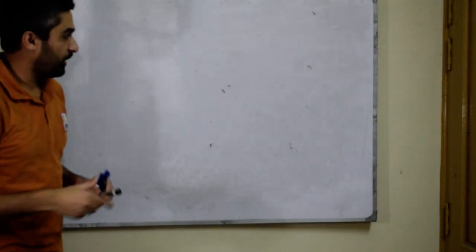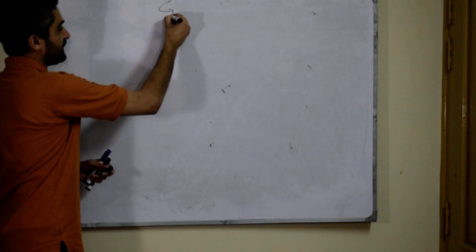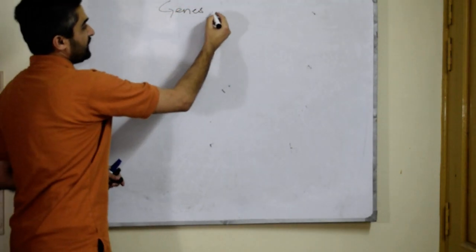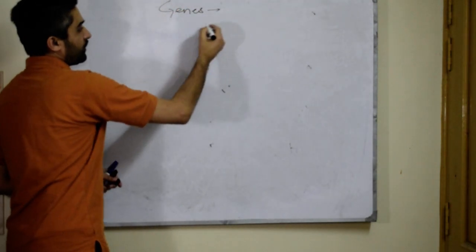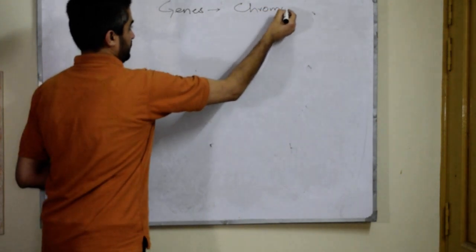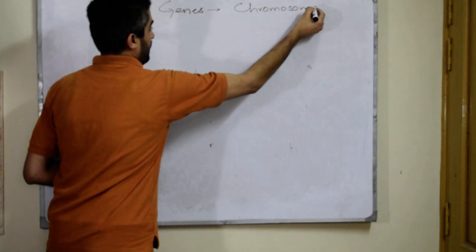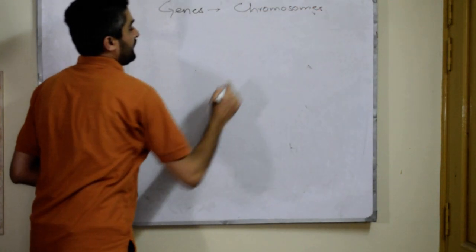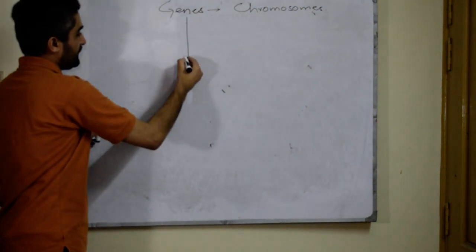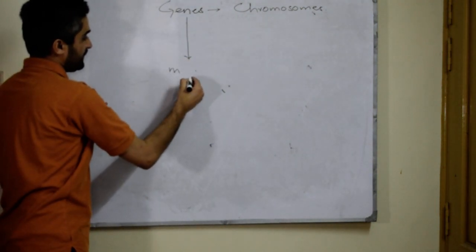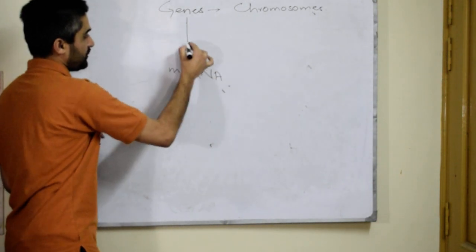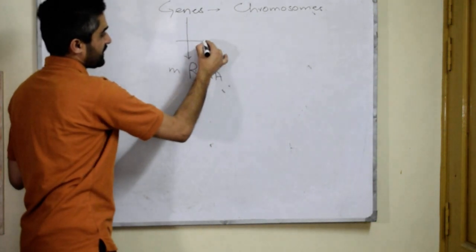We know that there are certain genes in the body. These genes are present on chromosomes. As a result of transcription, a gene produces a messenger RNA molecule.